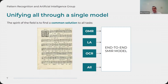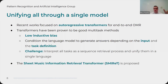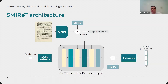The spirit of the field is to propose a common solution to all of the tasks. In the paper, we propose a solution based on autoregressive transformers for end-to-end processing that addresses all of them. Because transformers have a low inductive bias, they can be conditioned in a language model to generate answers depending on input and task definition. So we propose the Sheet Information Retrieval Transformer, also known as SMIRET. The architecture of SMIRET is the same as the Sheet Music Transformer presented before, but instead of just giving the music score, we also prompt the model with the task it has to perform in sheet music information retrieval.